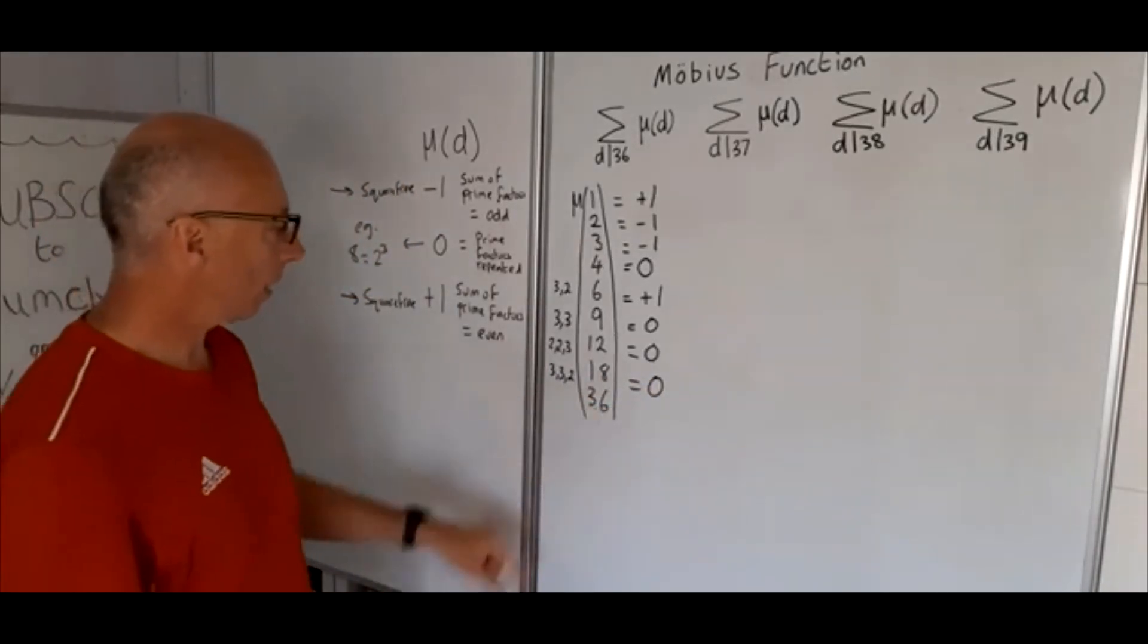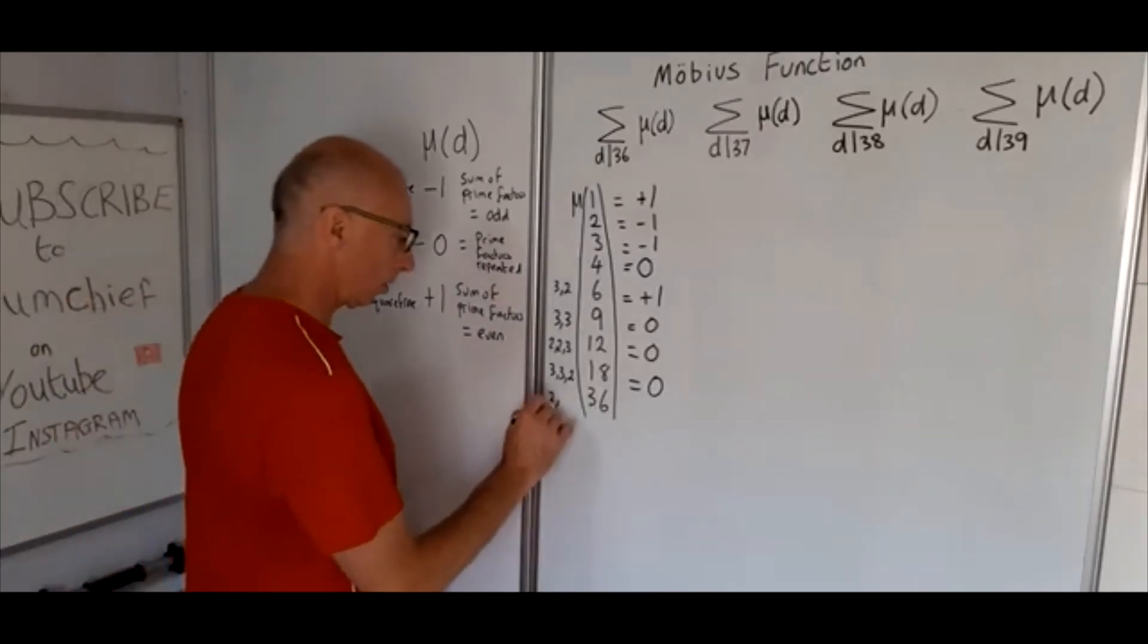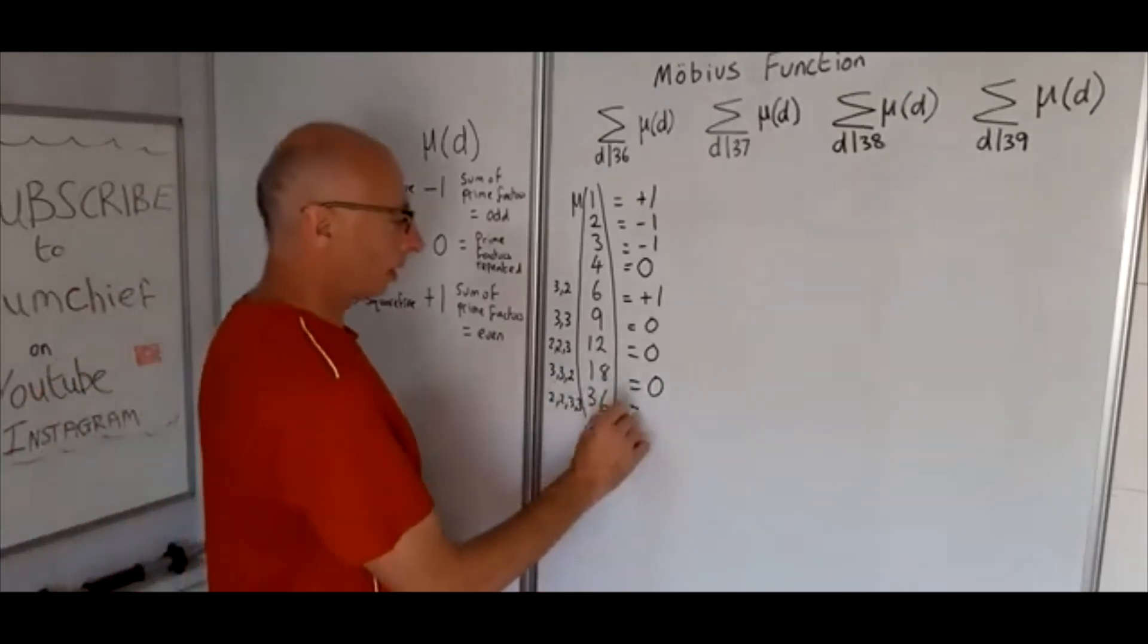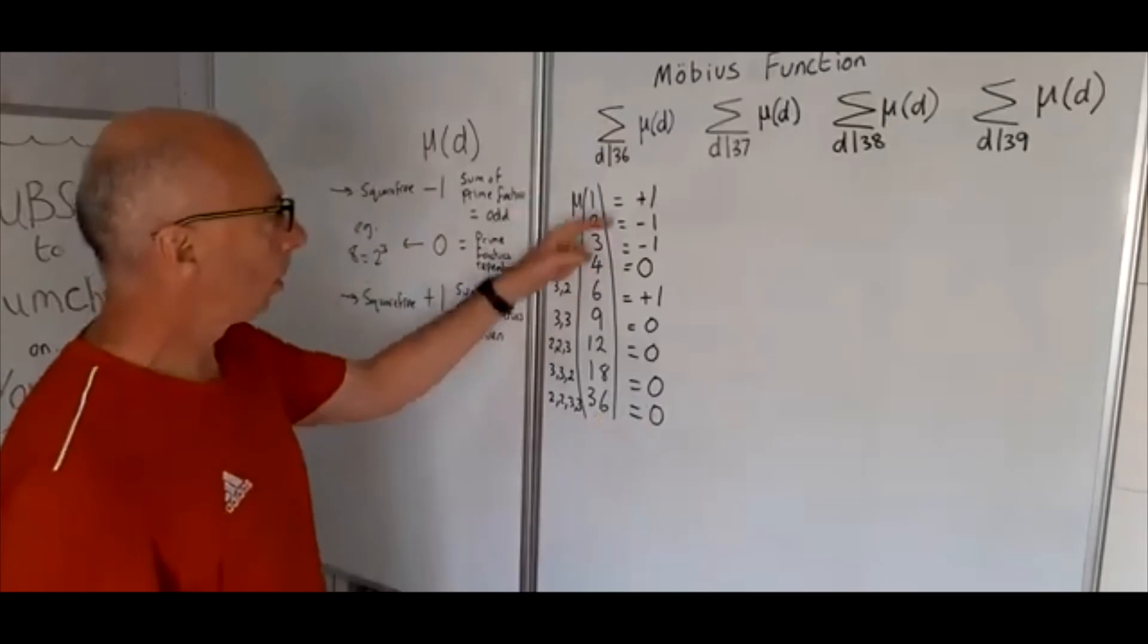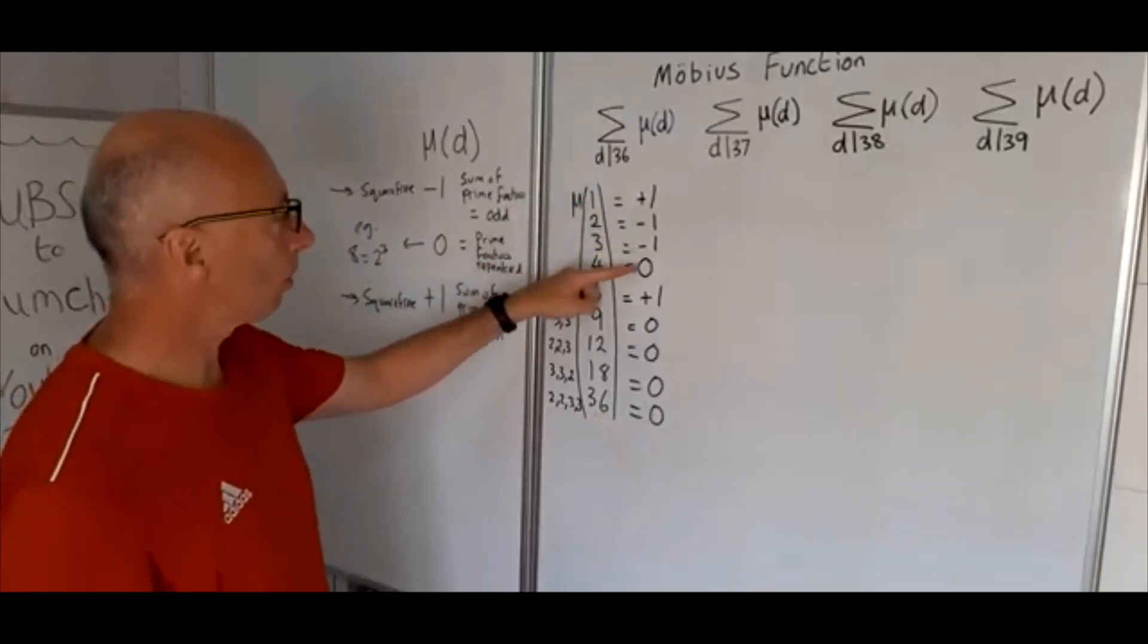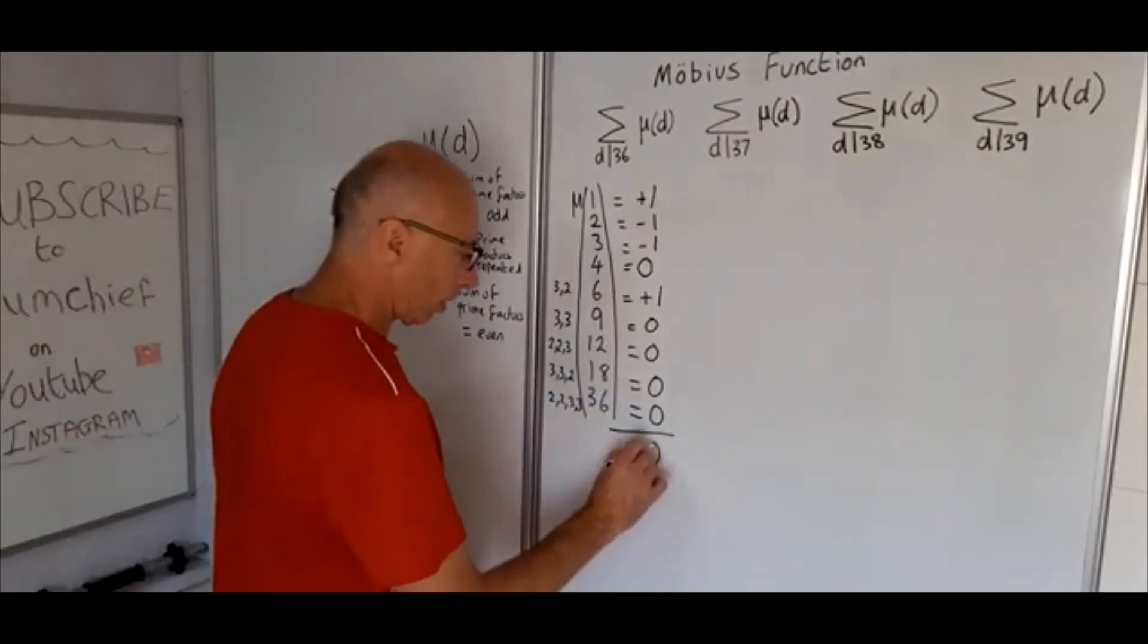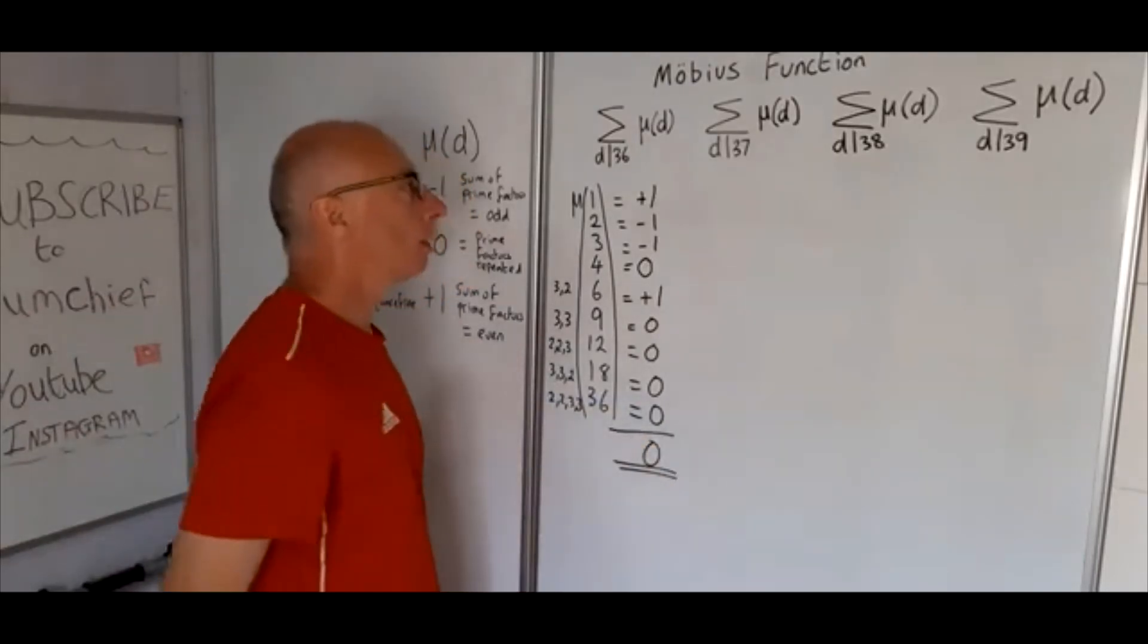And now 36. So now we're going to sum them all up: plus 1, minus 1, minus 1, plus 1, all the zeros gives us a grand total of 0.